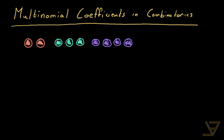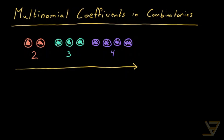The general scenario looks something like the one that I've drawn here, where we have two elements that are indistinguishable, three elements that are also indistinguishable, and four elements that are also indistinguishable. But we can distinguish between things that have different colors. We want to know the number of ways of ordering them from left to right using indices, with the condition that swapping two things of the same type or same color wouldn't produce a different permutation.